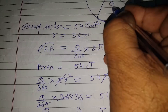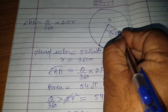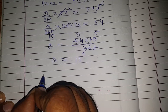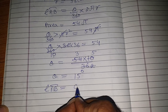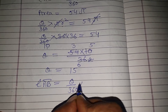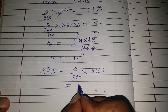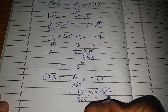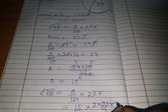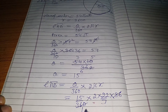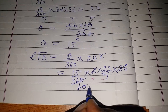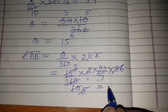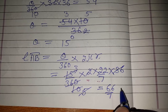So we get theta equals 15 degrees. Now we can find the length of the arc. Using the formula: length equals theta by 360 into 2 pi r, with theta equals 15 degrees, pi equals 22 by 7, and r equals 36. After cancellation, the answer is 66 by 7 centimeters.